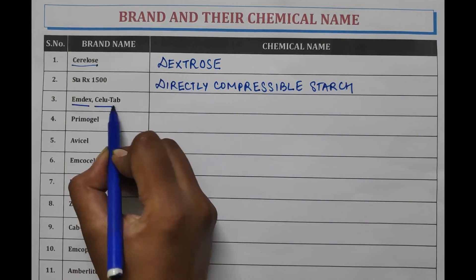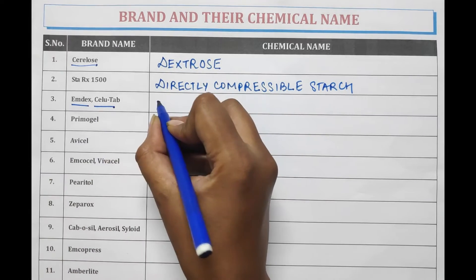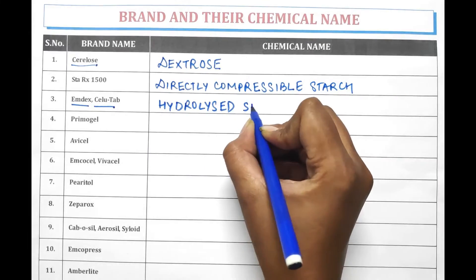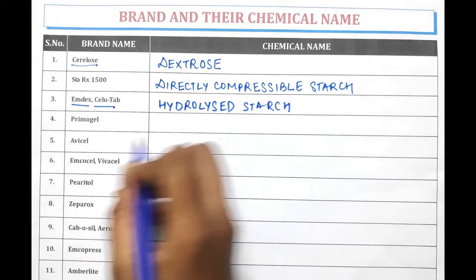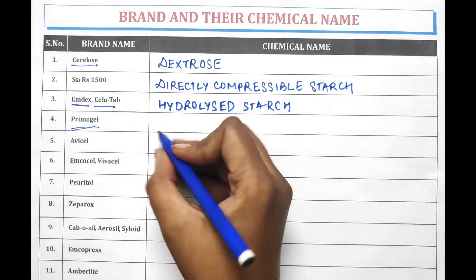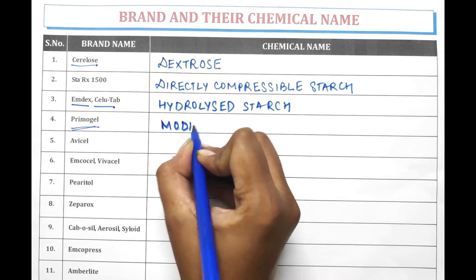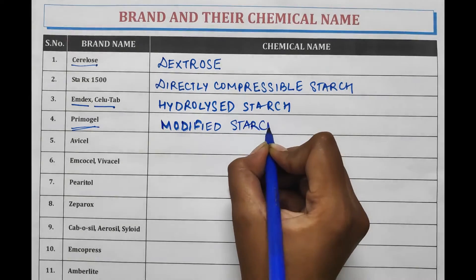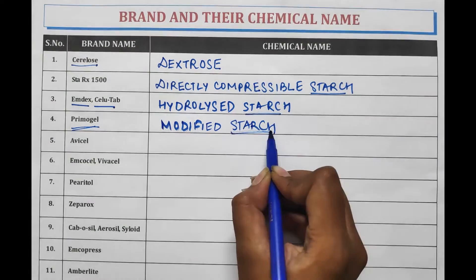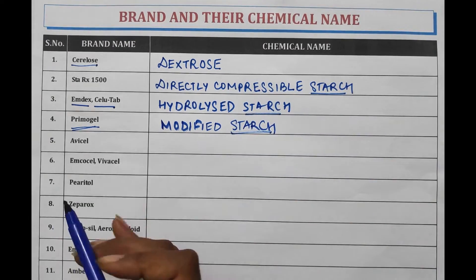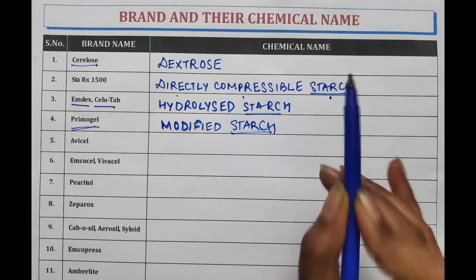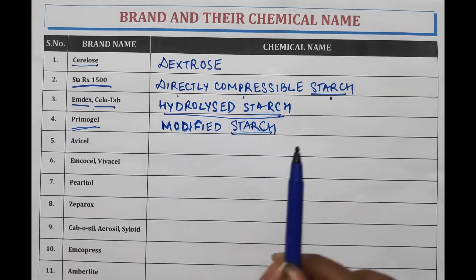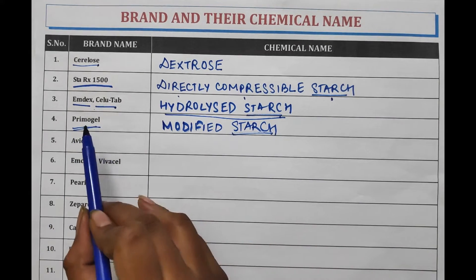Amdex or Cellulose is the brand name of Hydrolyzed Starch. Primogel is the brand name of Modified Starch. So here three types of starch are present, each with a different brand name: Directly Compressible Starch has brand name Star RX 1500, Hydrolyzed Starch has brand name Amdex or Cellulose, and Modified Starch has brand name Primogel.